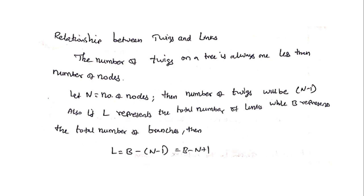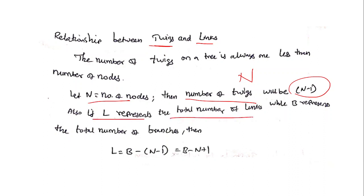Now let's see the relationship between twigs and links. Each branch of a tree is called a twig; each branch of a co-tree is called a link. The number of twigs is always n minus 1, where n is the number of nodes. If l is the total number of links and b is the total number of branches, then l = b − (n − 1), which equals b − n + 1. Using this relation, if we know two values we can find the third.